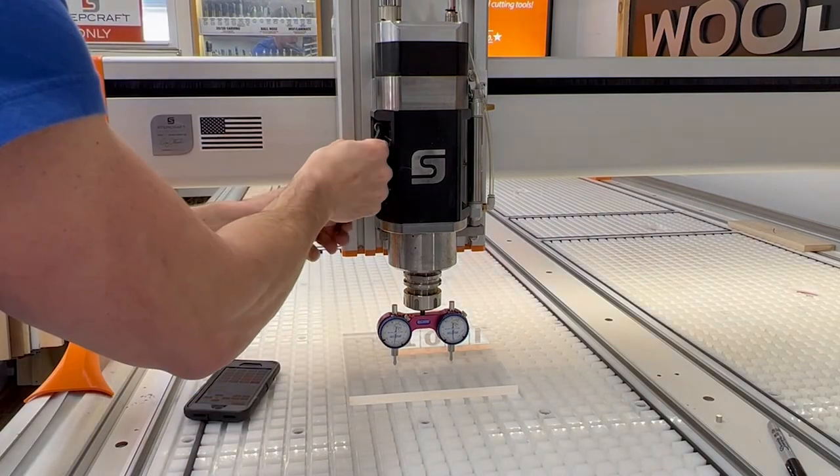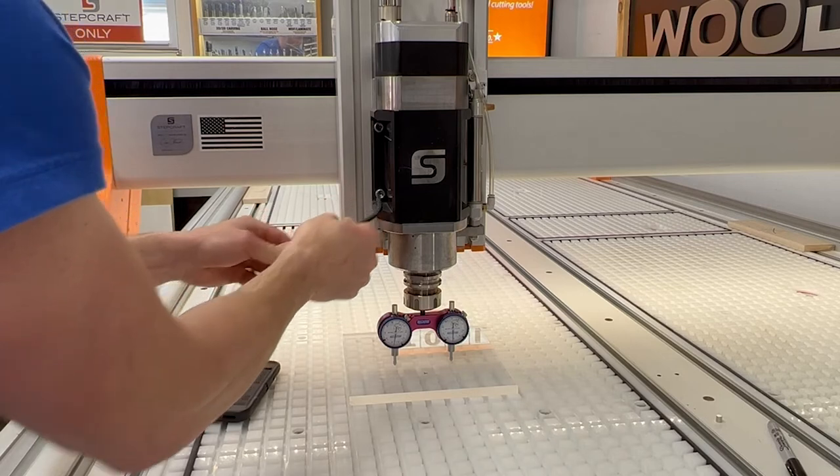Don't worry about knocking the X axis out of tram. The shim is going to hold that in place. We're only worried about our Y axis.